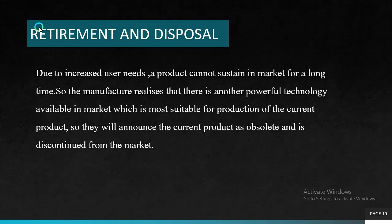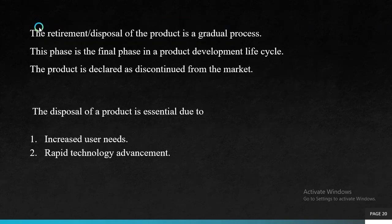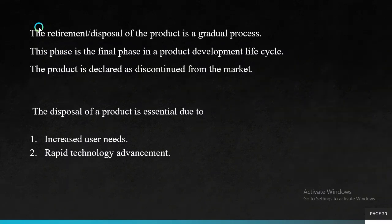The next phase is retirement and disposal. Due to increased user needs, a product cannot sustain in the market for a long time. The manufacturer realizes that another more powerful technology is available, more suitable for production. They announce the current product as obsolete and discontinued from the market. The retirement or disposal of the product is a gradual process. This is the final phase in the product development life cycle. Disposal of a product is essential due to increased user needs and rapid technology advancement.